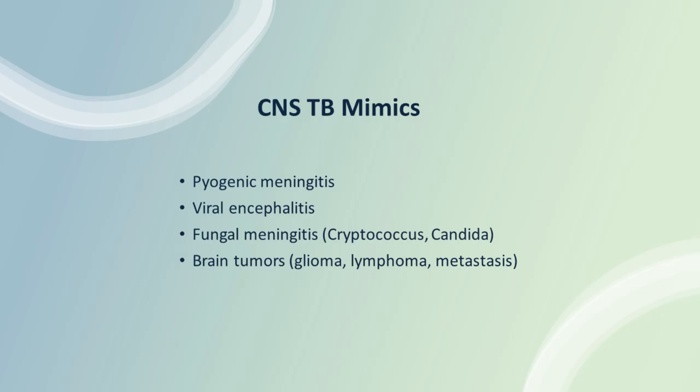For CNS mimics, TB meningitis — TBM — typically presents with lymphocyte predominance, low sugar, and a longstanding history, and is called TB meningoencephalitis because it has both meningitis and encephalopathy components. Pyogenic meningitis presents as meningitis without altered sensorium. Viral encephalitis presents with altered sensorium. TB meningoencephalitis may present with altered sensorium, raised ICP, and meningeal signs. Other mimics include fungal meningitis — cryptococcal — and brain tumors such as gliomas, lymphomas, and metastases that may mimic tuberculomas.